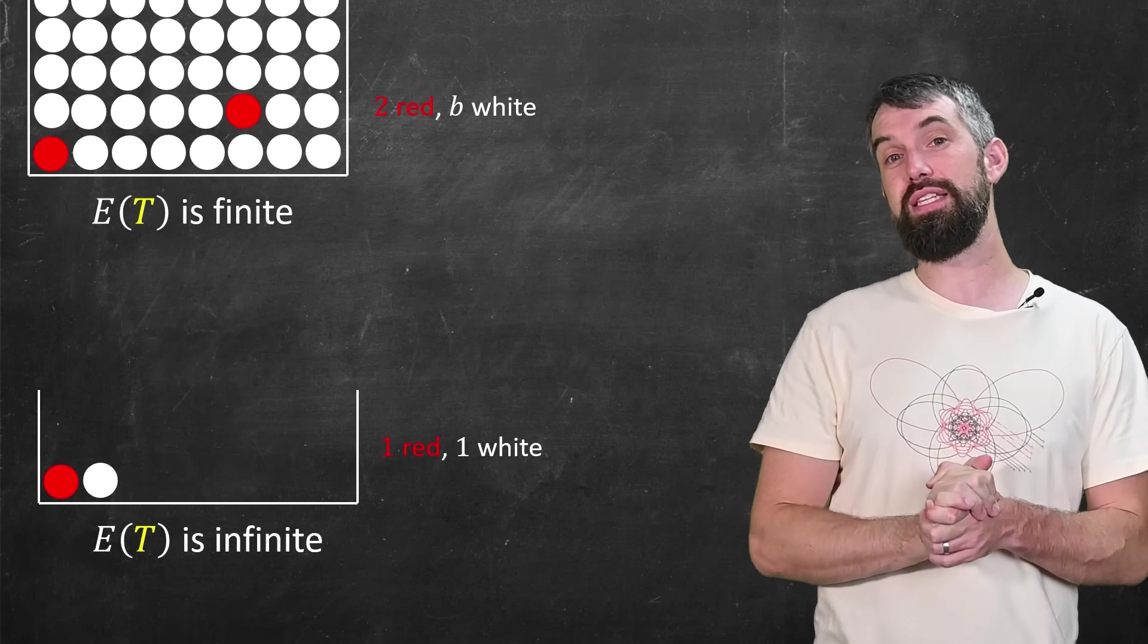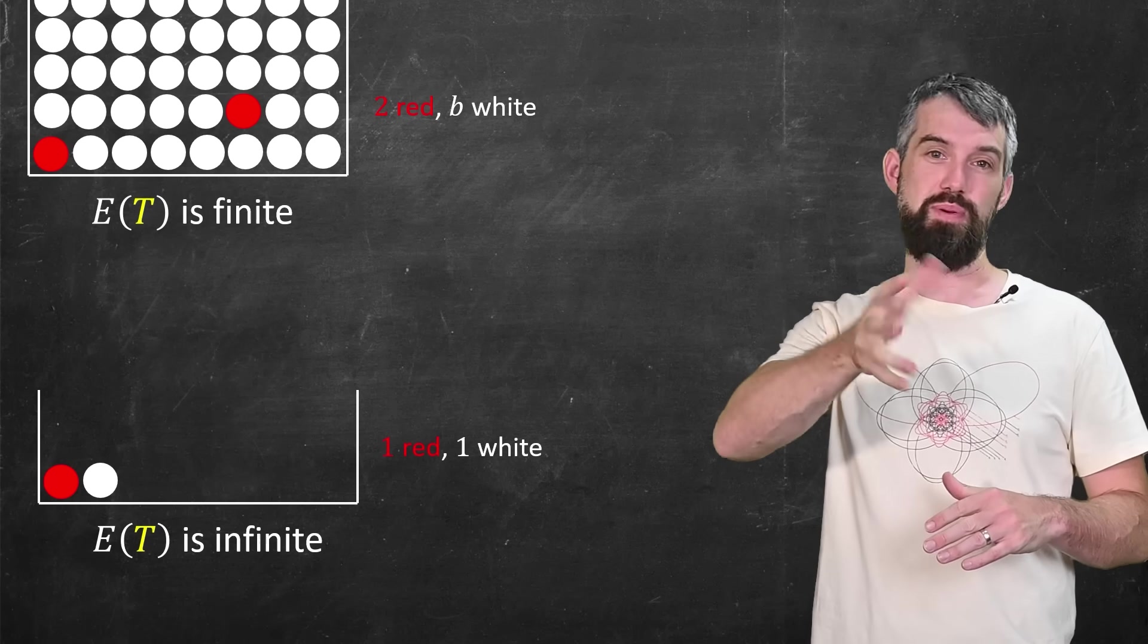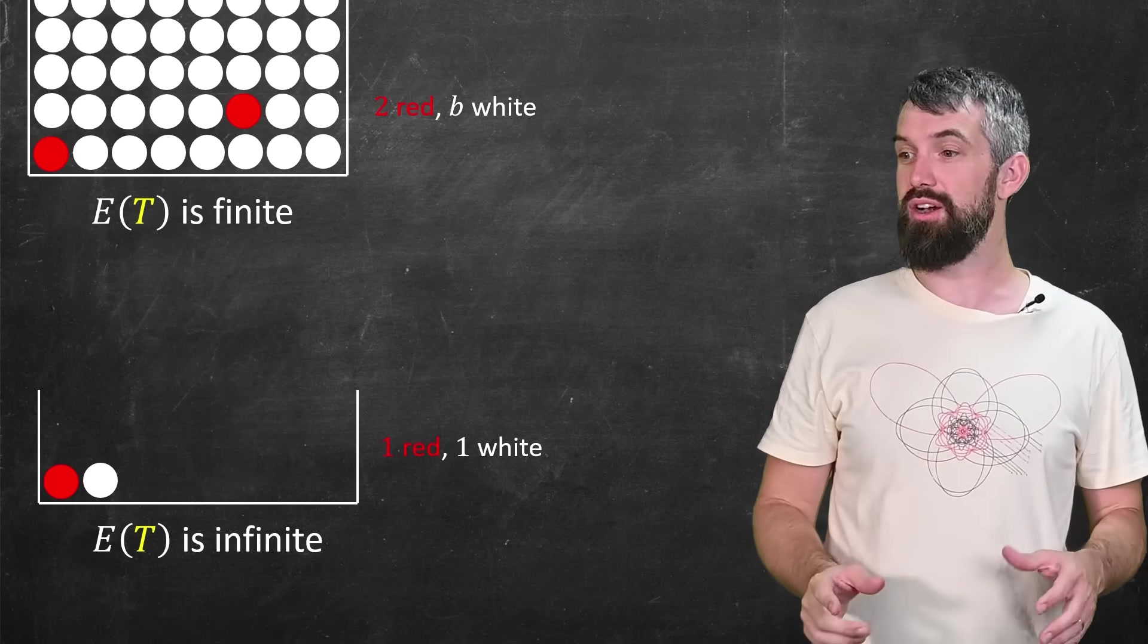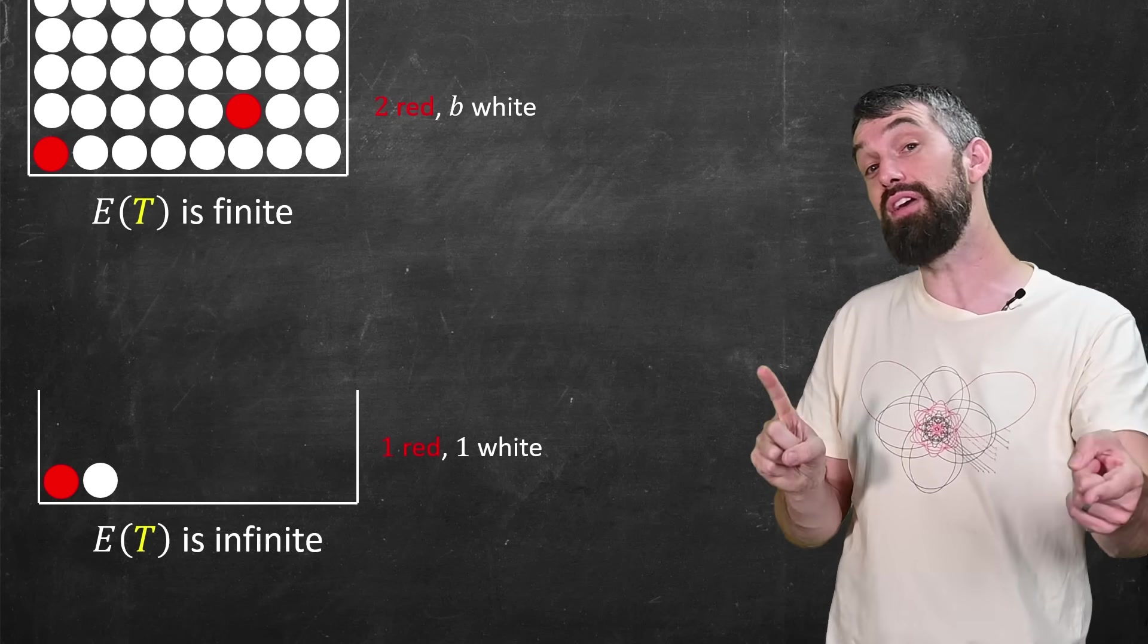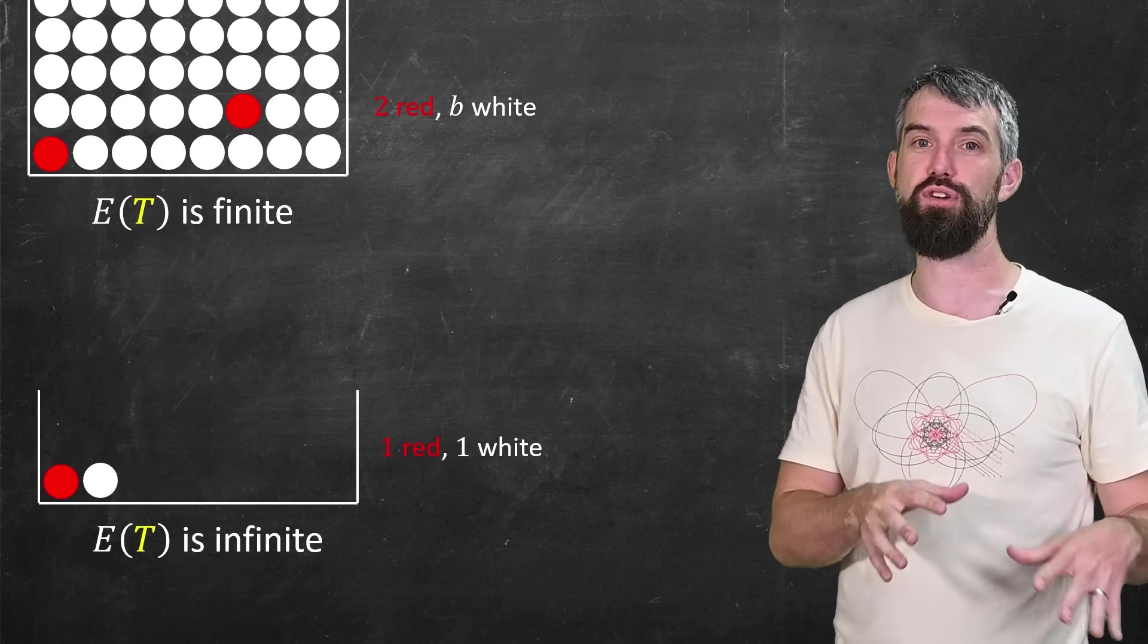And part of the reason for this is that the harmonic series, that 1 over n, is right on the boundary between converging and diverging. The real problem spot is a scenario when you have one red and a huge number of whites. Improving that to even two reds and a huge number of whites is enough to switch from diverging to converging.